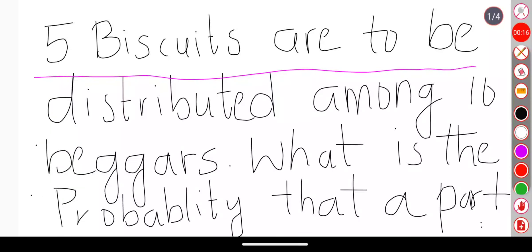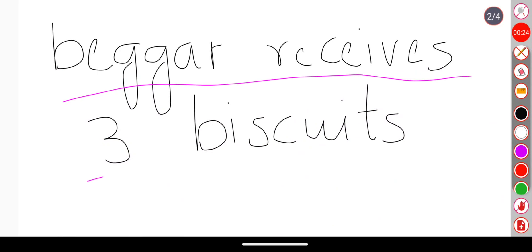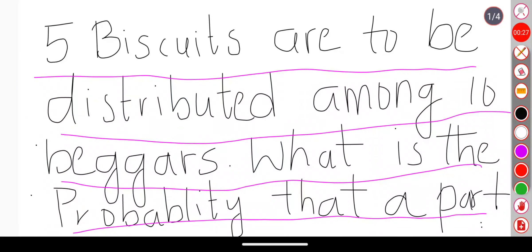...are to be distributed among 10 beggars. What is the probability that a particular beggar receives three biscuits? So in the question, what he is saying is that there are five biscuits - how many biscuits? Five biscuits are there.